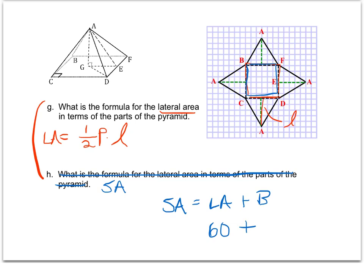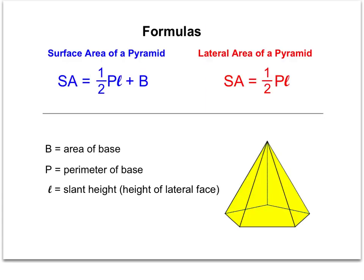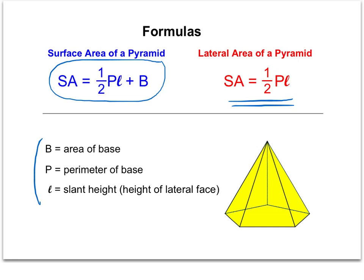For total surface area, it's lateral area plus the area of the base. The lateral area is 60, and the area of the square base is 6 times 6 equals 36. So total surface area is 96 square units. The final formula for any pyramid is: surface area equals one-half perimeter times slant height plus area of the base. The lateral area alone is just one-half PL. Make sure you know the difference between slant height and altitude — those are easy to mix up. We'll use these formulas in the next set of practice problems.